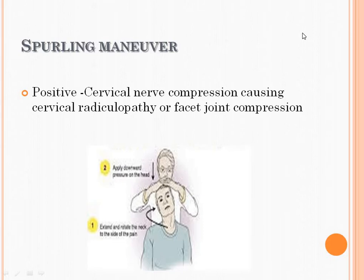Spurling's test: the examiner slightly compresses the head of the patient. The patient slightly extends and rotates the head. If no pain occurs, that is a negative Spurling's test. If pain is severe, that is a positive Spurling's test. It indicates cervical nerve compression, which causes cervical radiculopathy — radiculopathy means radiating pain.